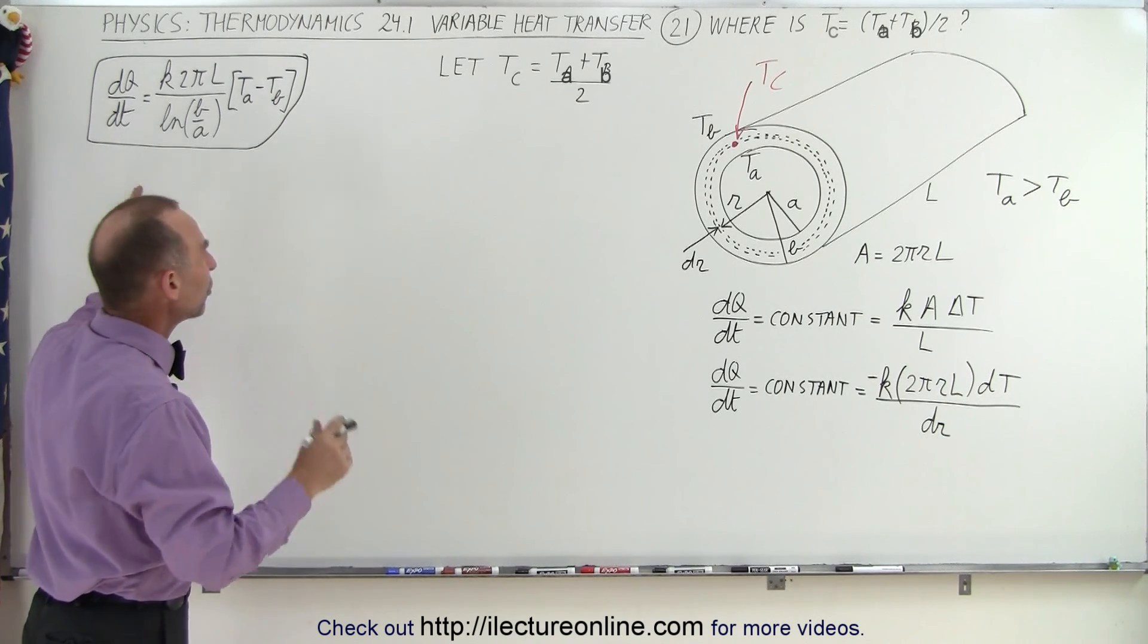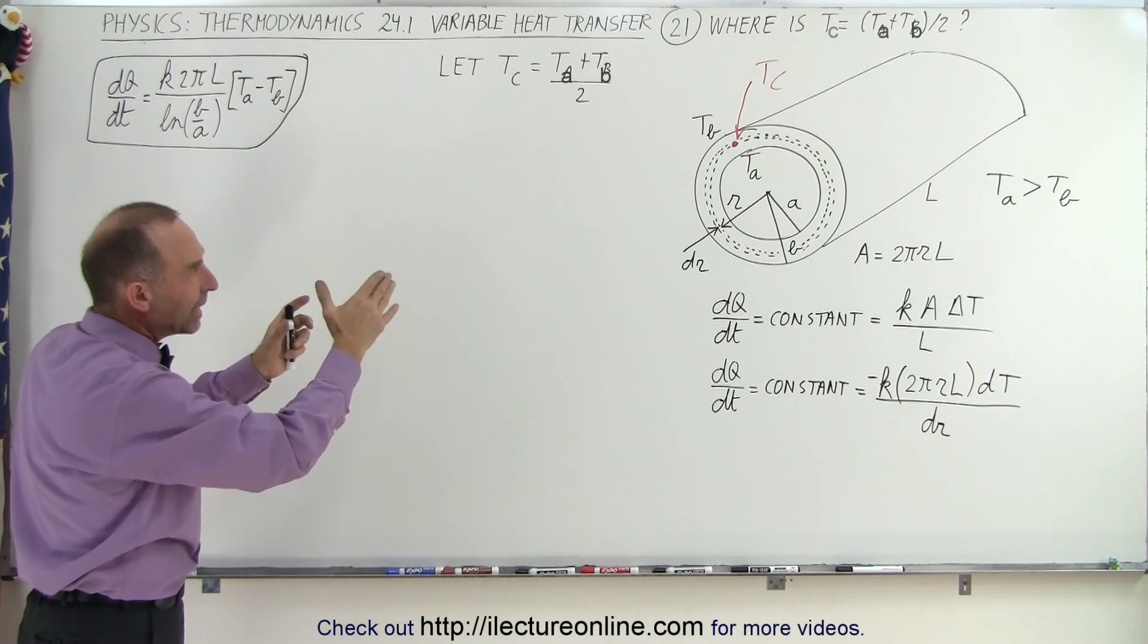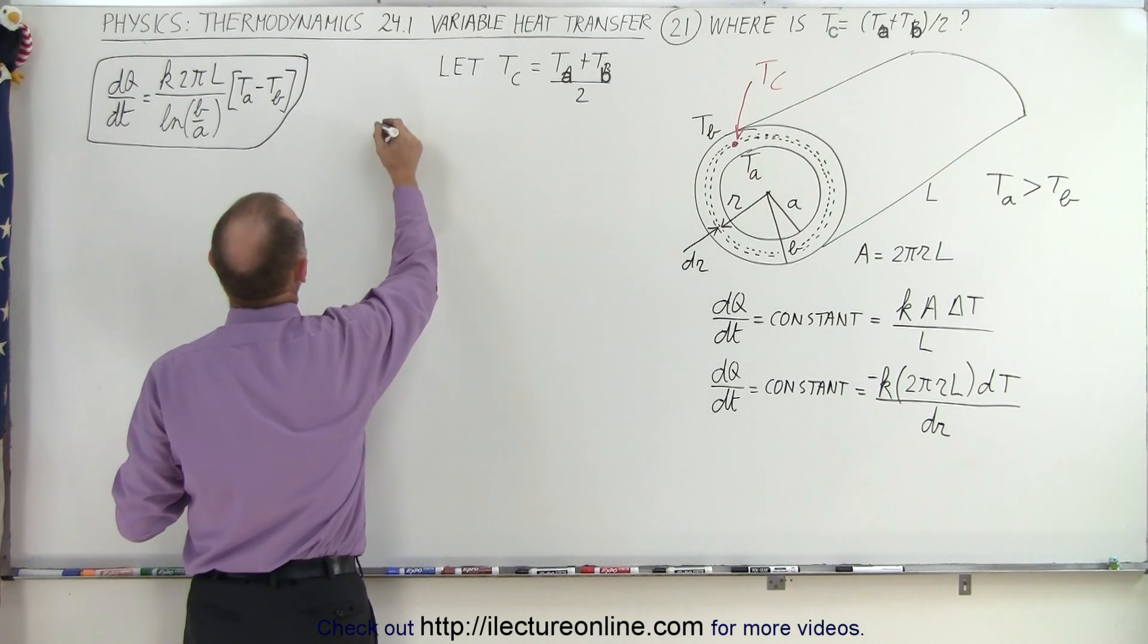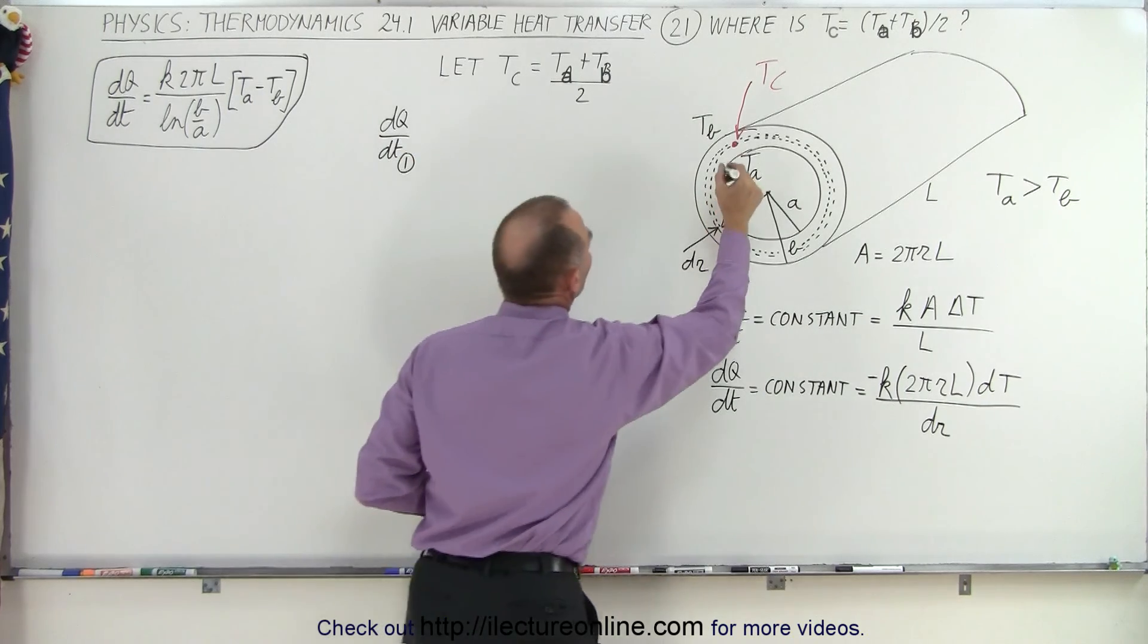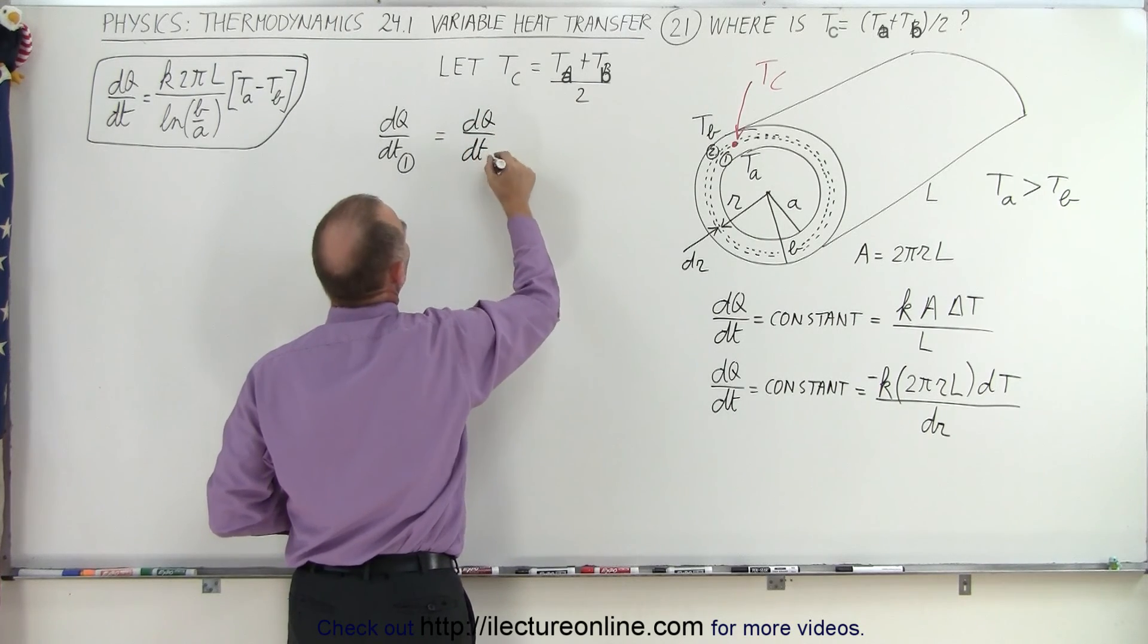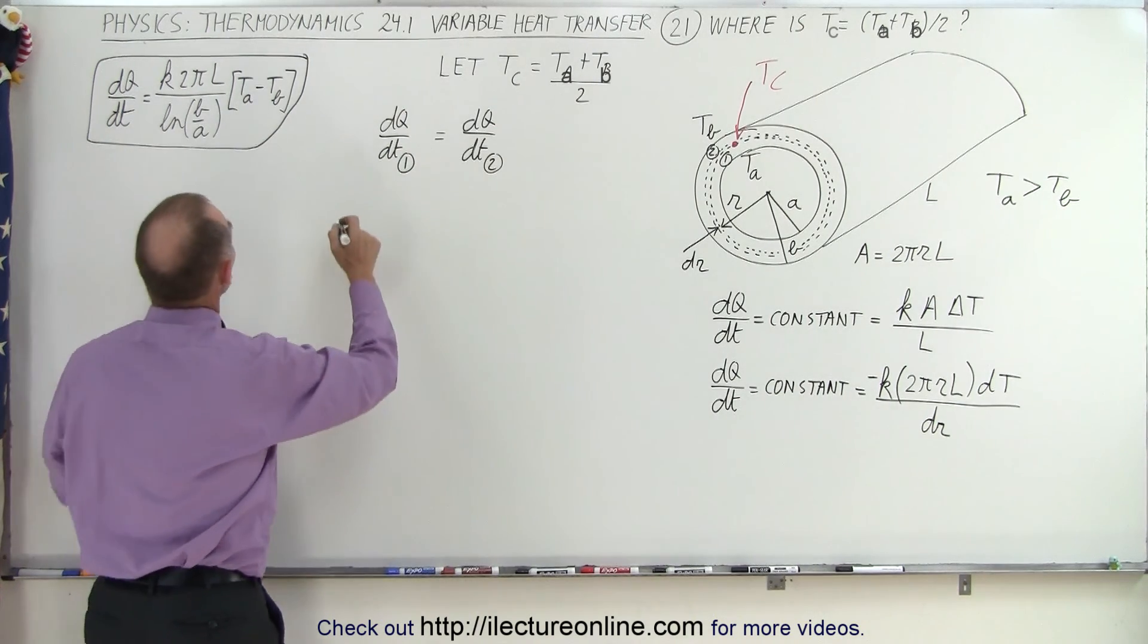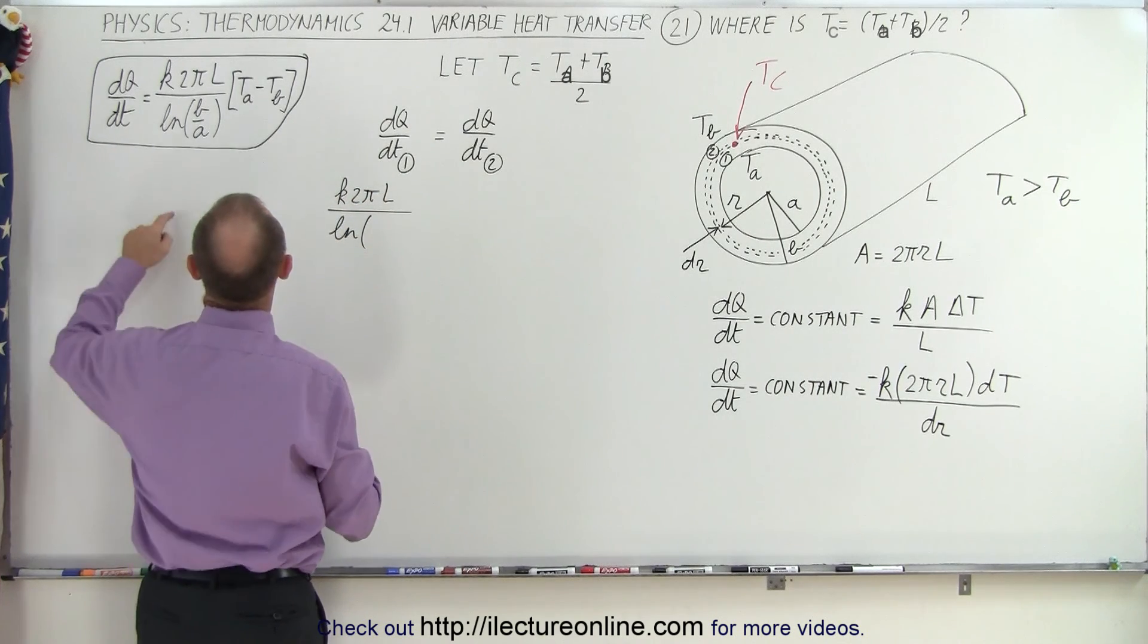So we're going to set the two equations equal to each other. The heat flow through the inside portion of that shell equals to the dQ/dt on the outside portion of the shell. So in other words, we can say that dQ/dt on the inside, let's call this region 1, and let's call this region 2, is equal to dQ/dt on the outside portion of that shell. So now we're going to use this equation. So we're going to say that K times 2πL divided by the natural log of,